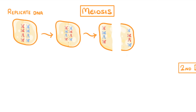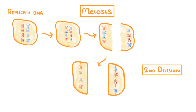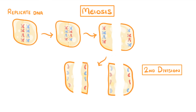Next we have the second division, and for this the chromosomes all line up along the center of the cell again, but this time it's the two arms of each chromosome that are pulled to opposite sides of the cell. When the cell is ready, the cells then divide in half again, leaving us now with four cells.